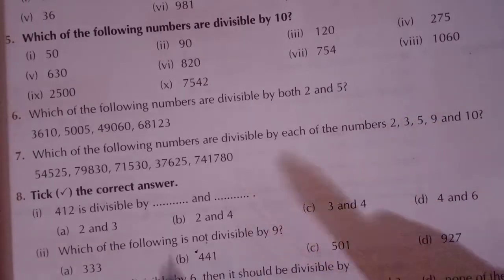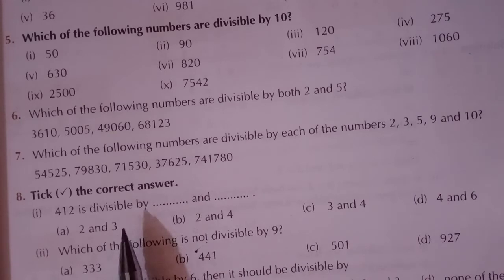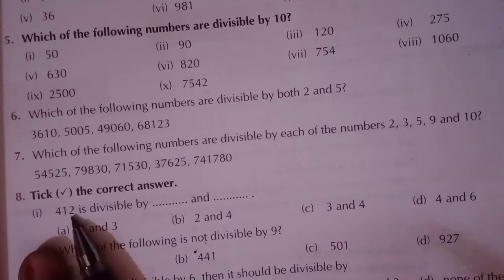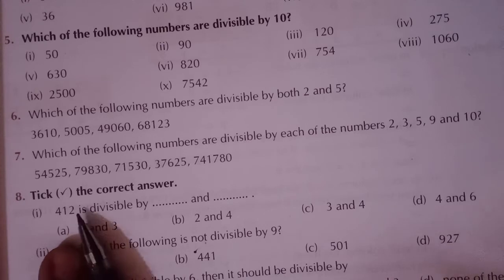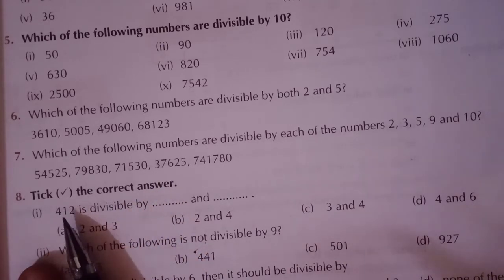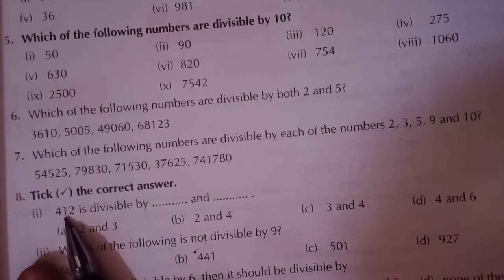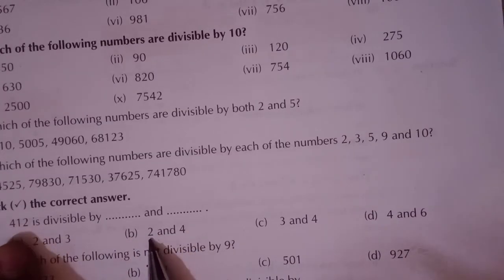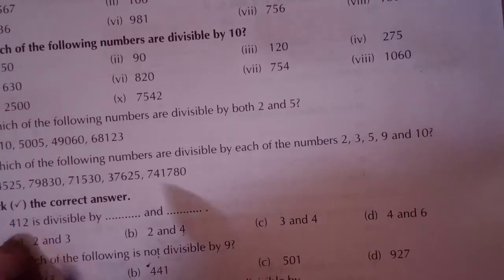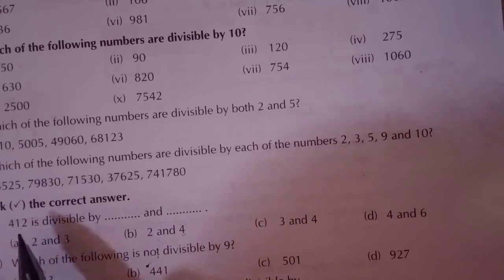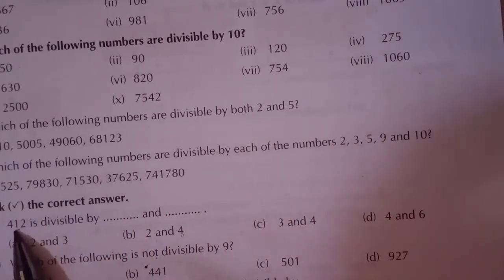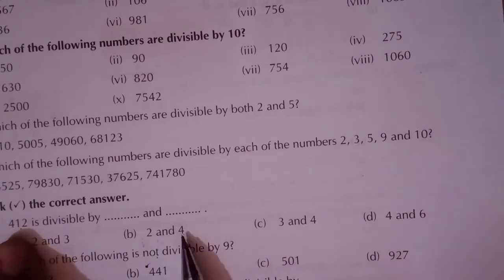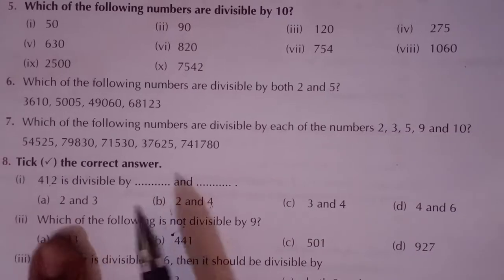The rest of the three parts you will do by yourself. Now let's see the MCQs. First: 412 is divisible by which numbers? Units digit is 2 — divisible by 2. Sum of digits: 4 plus 1 plus 2 equals 7 — not divisible by 3. Checking for 4: we check the last two digits, which is 12 — 12 is divisible by 4. So 412 is divisible by 2 and 4. The answer to part 1 is B.